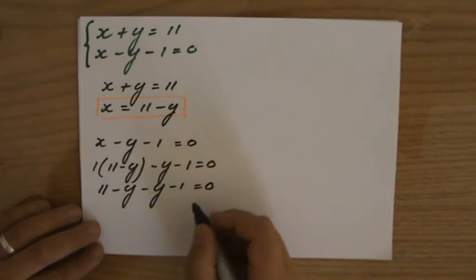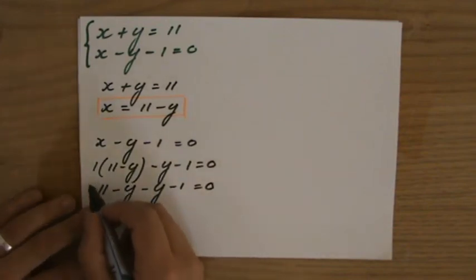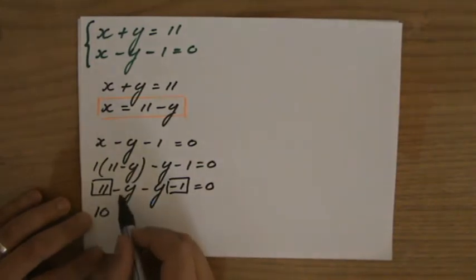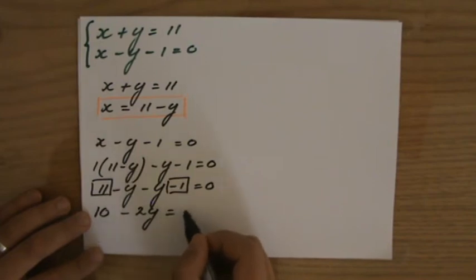Now, let's simplify the left side. So, 11, I have minus 1. That will be 10. And minus y minus y is minus 2y. And that equals 0.